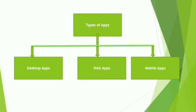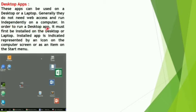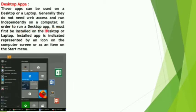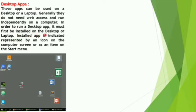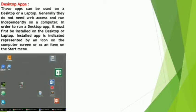These apps can be used on a desktop or a laptop. Generally, they do not need web access and run independently on a computer. In order to run a desktop app, it must first be installed on the desktop or laptop. An installed app is represented by an icon on the computer screen or as an item on the start window, like Excel, Word, PowerPoint, indicated with the start button.